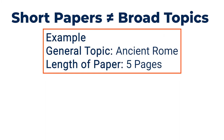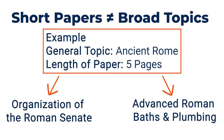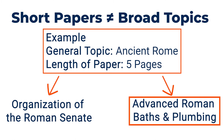Let's take an example. The topic assigned to you is the Ancient Roman Empire, and the required length of the paper is five pages. This is a broad topic that requires narrowing. To do so, try looking at something within the Roman Empire that interests you. For example, you could write a paper that focuses on the Ancient Roman baths and the innovative plumbing they required, along with their role in Roman society. This is a narrow topic specific to a broader topic that will work for your paper.